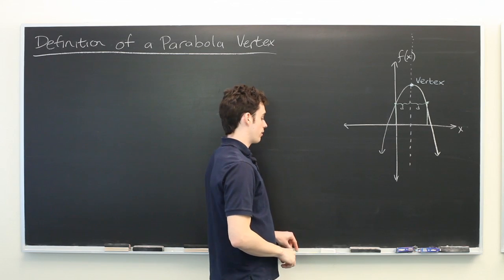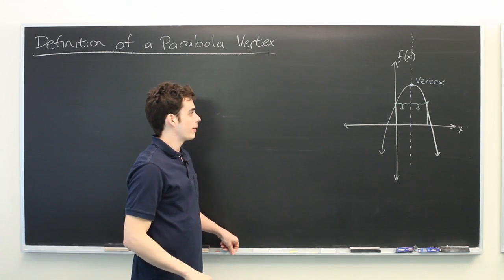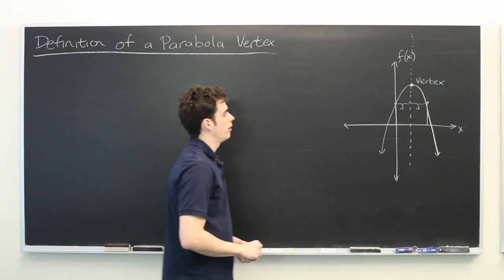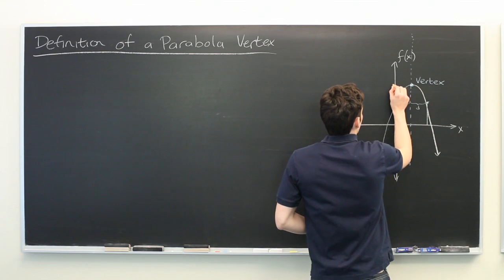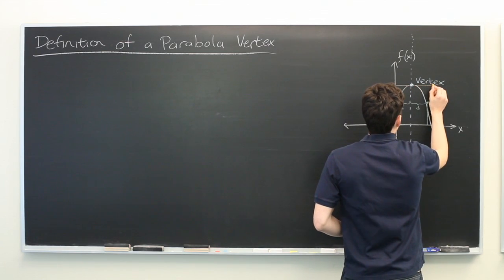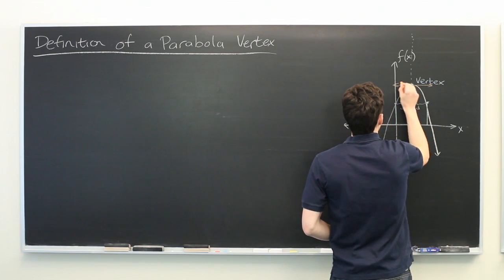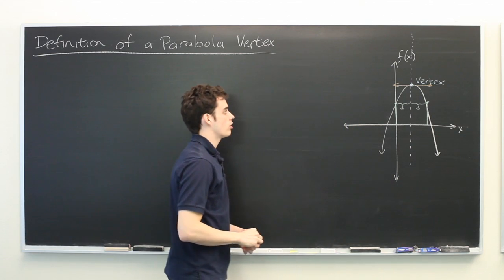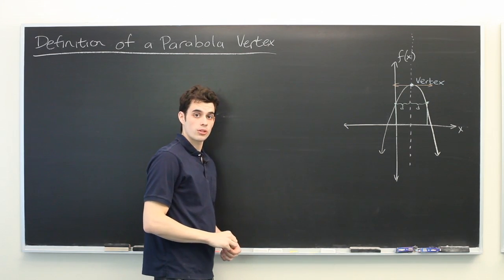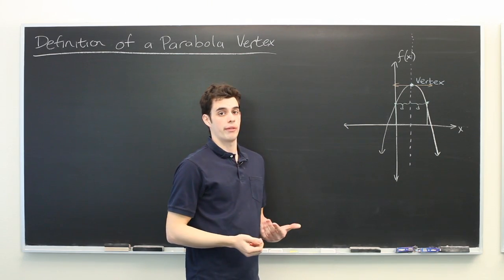Now another way of defining the vertex is by looking at tangent lines. The vertex is the only point on a parabola in which the tangent line at that point is horizontal, which means the derivative there is zero.